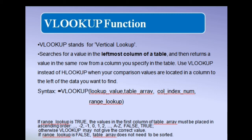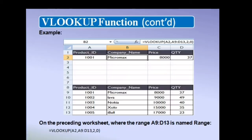This is the syntax. If you want to find out company name on the basis of product ID, then your VLOOKUP function will be equals to VLOOKUP A2, which is your cell address of product ID. Then select the range like A9 to D13.